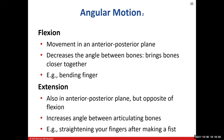Angular motion involves two bones and describes what happens when we increase or decrease the angle between them. Flexion moves through the anterior-posterior plane and brings one bone closer to the other, decreasing the angle. For example, bending your elbow to bring a cup to your mouth is flexion.